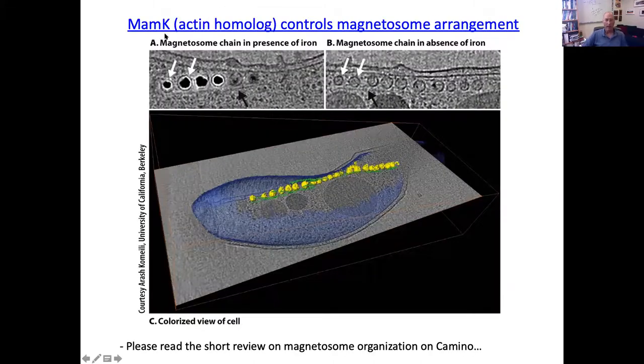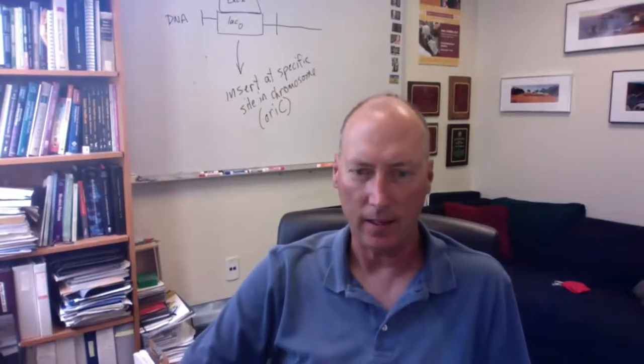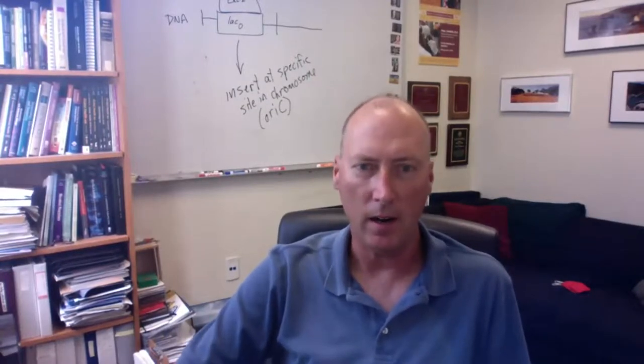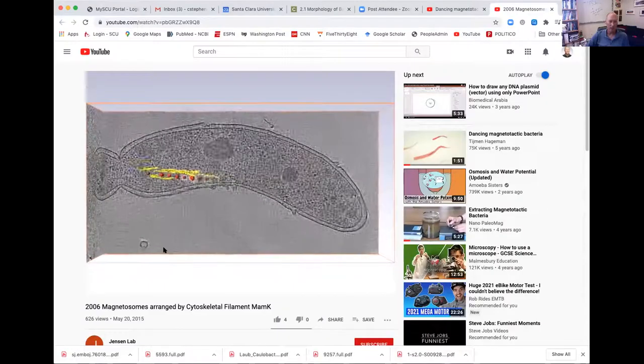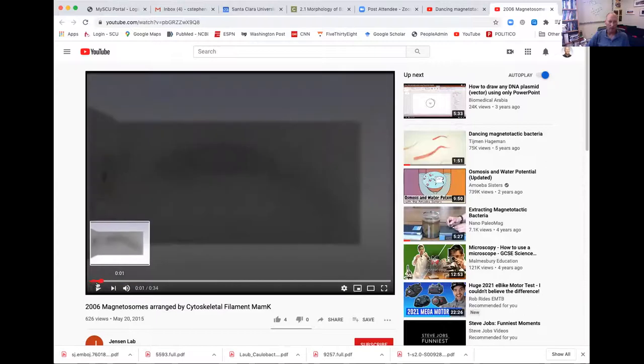And it turns out that another actin homolog forms the filaments that organize the magnetosomes into this nice chain here. If you don't have this MamK protein, then you don't get the nice chains. And you can actually see this. Give me a second here. I need to stop sharing that. And now I need to share this so you can see this video. Let's see. Let's go back to the start here.